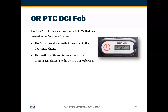FOBs are not smart devices and do not have any GPS functionality. Using a FOB for time entry requires a paper timesheet and access to the ORPTC DCI web portal. You can see a picture of your FOB on your screen — it looks kind of like a little USB drive.